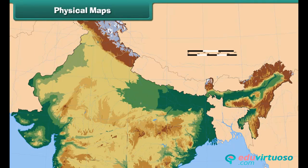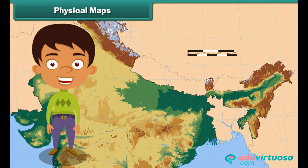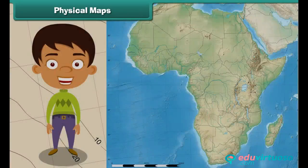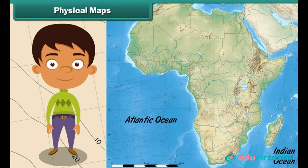Physical maps illustrate the physical features of an area such as mountains, rivers and lakes. Water bodies are usually colored blue in a physical map. Different colors are used to show different land elevations — green for lower elevations and orange or brown for higher elevations. For example, the physical map of Africa shows the African continent located between the Atlantic Ocean on the west and the Indian Ocean in the east. The African continent is also shown as sharing its northeast border with the Red Sea.